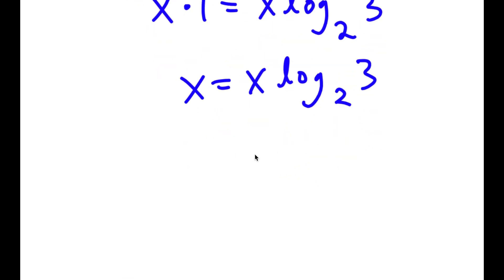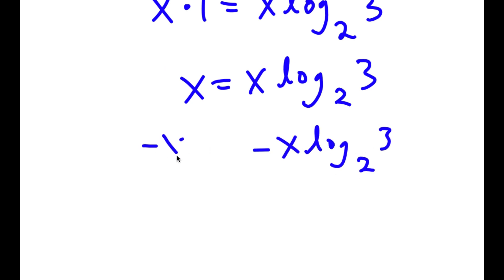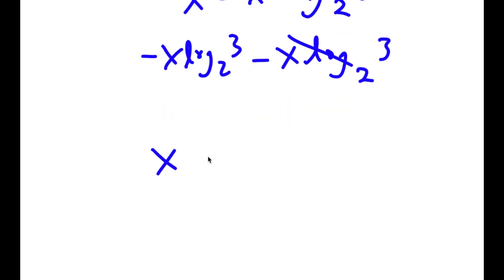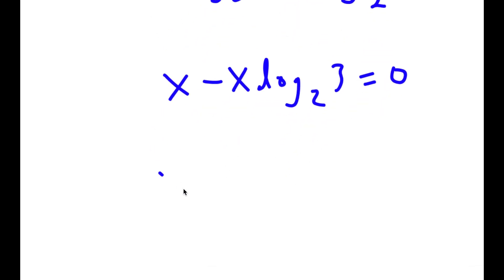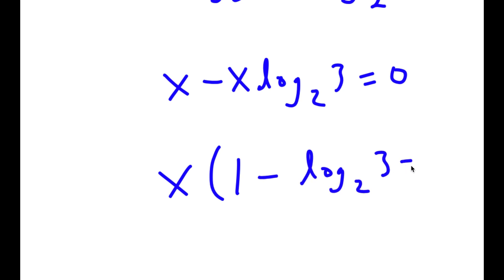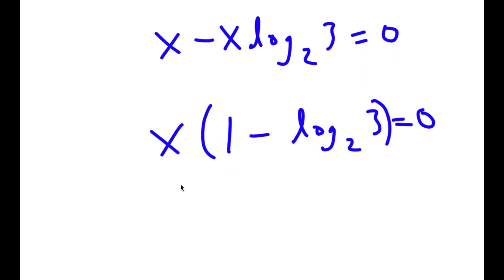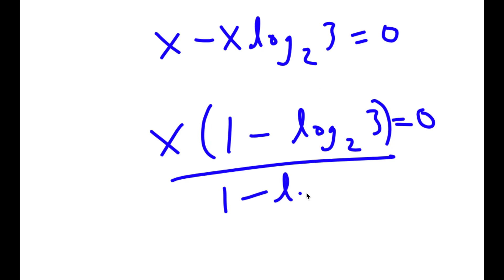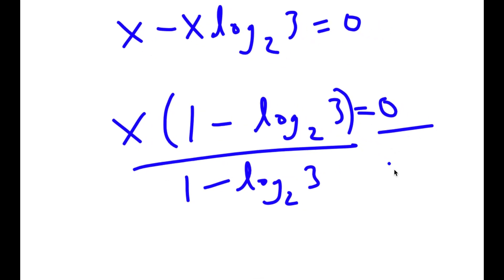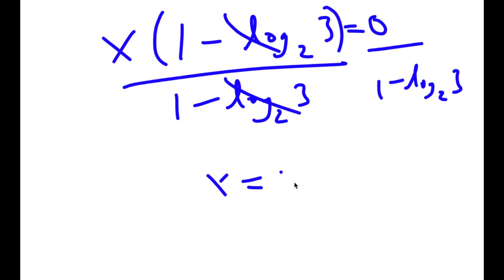Now I'm going to subtract x times log base 2 of 3 from both sides. When these cancel out, I get x minus x times log base 2 of 3 is equal to 0. If I factor out x, I get x times (1 minus log base 2 of 3) is equal to 0. And if I divide both sides by 1 minus log base 2 of 3, I'm left with x is equal to 0.